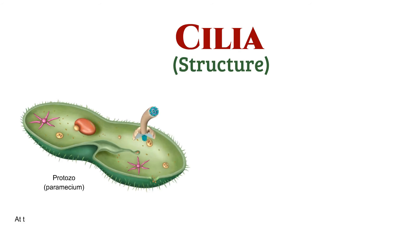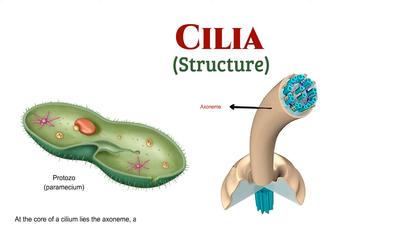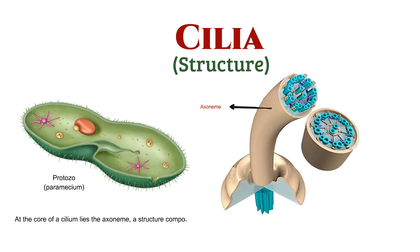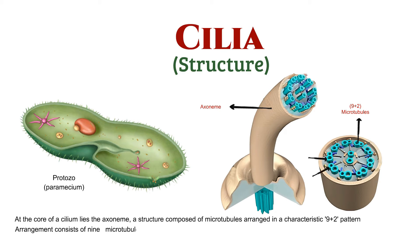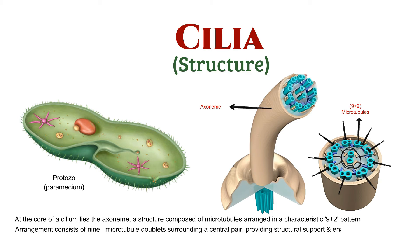At the core of cilia lies the axoneme, a structure composed of microtubules arranged in a characteristic 9+2 pattern. This arrangement consists of nine pairs of microtubule doublets surrounding a central pair, providing structural support and enabling movement.